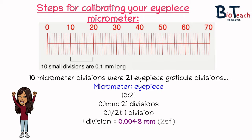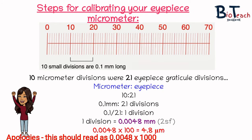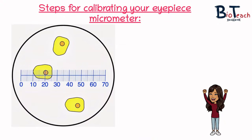We don't want to work with these inconvenient decimal places, so we can convert to micrometers by multiplying by 1,000 — so 0.0048 becomes 4.8 micrometers. Essentially, each eyepiece graticule division is 4.8 micrometers. We're now in a position to measure the sample at this magnification. You can measure your specimen using the eyepiece graticule and convert the number of divisions counted to an actual length.